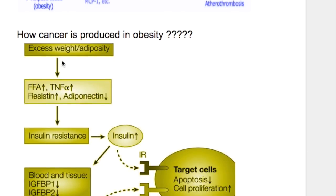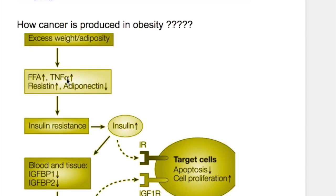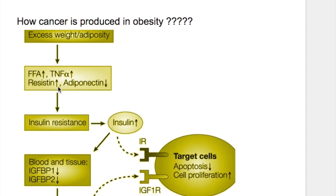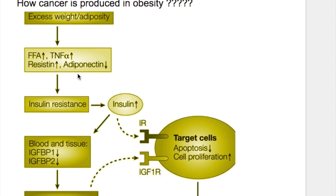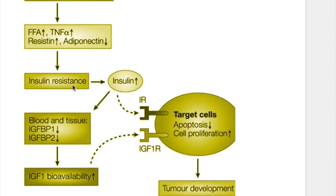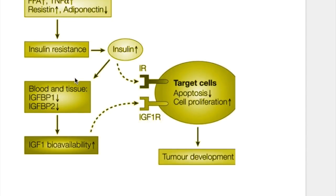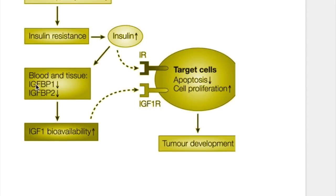How does cancer develop in obesity? Excessive weight and adiposity cause increased free fatty acids, increased TNF-alpha, increased resistin, and decreased adiponectin — all leading to insulin resistance and hyperinsulinemia. Hyperinsulinemia decreases binding proteins of insulin-like growth factor (IGF), so free IGF-1 is increased and its bioavailability is increased. The increased IGF-1 leads to increased cell proliferation and tumor development.